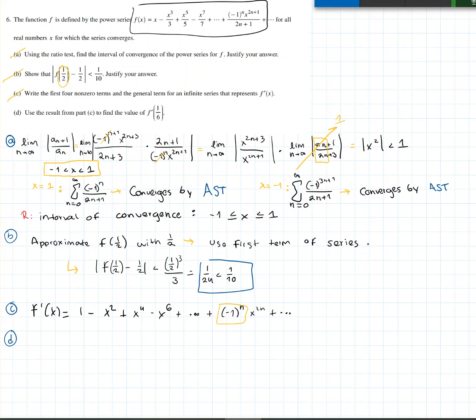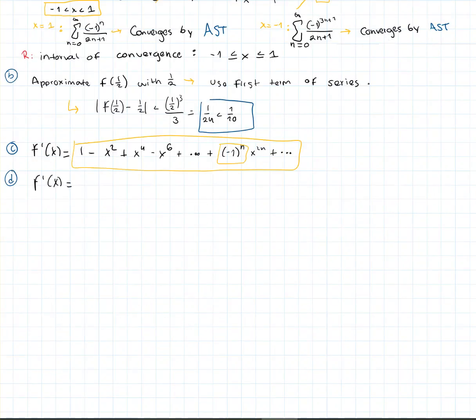And part D, which also relates to part C, is use the result from part C to find our value of f'(1/6). When I started the test, I immediately noticed this is a geometric series. We immediately know that. Since this is a geometric series, we just gotta find how much does it jump per each power series. Well, it's interchanging from negative to positive. It's alternating. So, we know there's gonna be a negative sign.